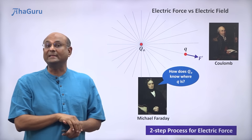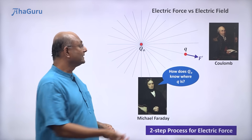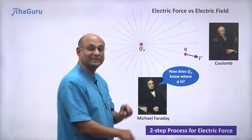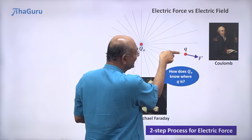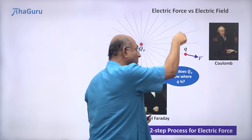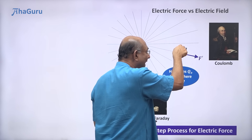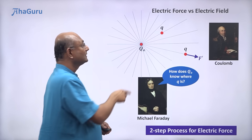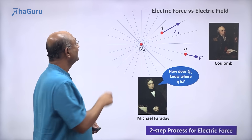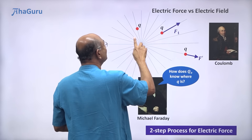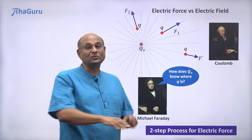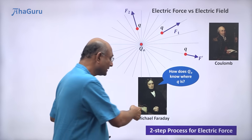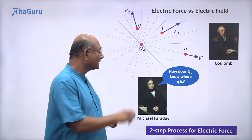Faraday argued that Q naught is going to put invisible lines in space. These lines exert a force when Q comes there. Whether Q was there or not, Q naught is going to put these lines. If I now bring Q and keep it here, the line at that point knows that you have brought Q because its line is there. So when you bring Q to that line, the line exerts the force. The line is already there. If I brought Q there, that line is going to exert force F1 on Q. If I take Q and move it to another place, this line is going to exert a different force F2 on Q. So Q naught does not know where Q is — Q naught just puts lines all over space, and the lines exert a force on the charge. This is the two-step process for electric forces that Faraday proposed.